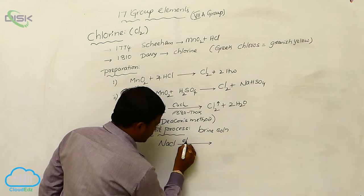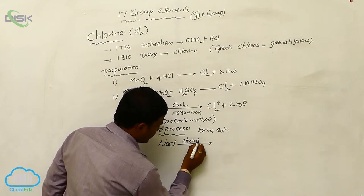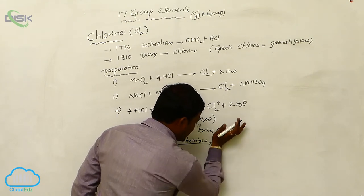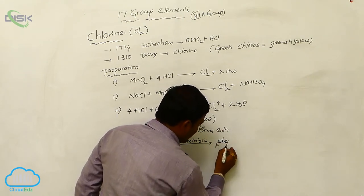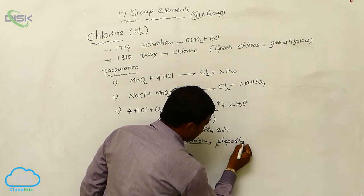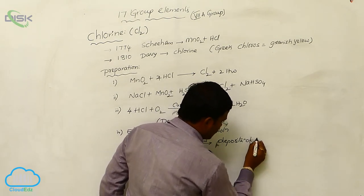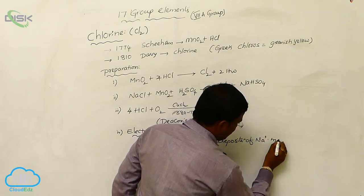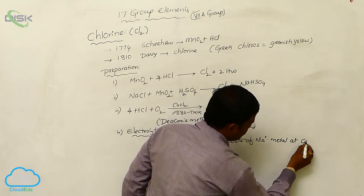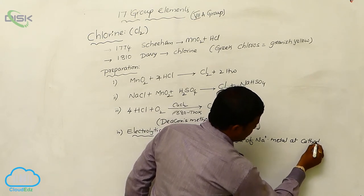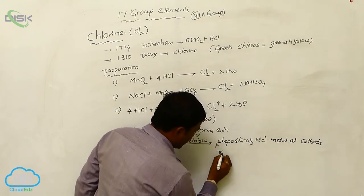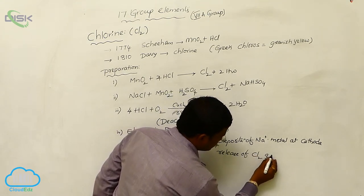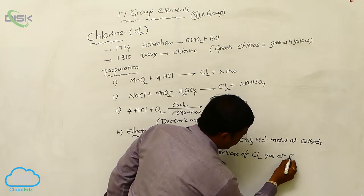In its electrolytic process, electrolysis produces deposit of sodium metal. Sodium metal deposits, deposit of sodium metal, sodium metal at cathode, whereas release of chlorine gas at anode is observed.